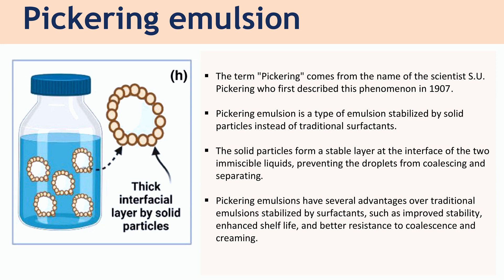The other type of emulsion is Pickering emulsion. The term Pickering comes from the name of the scientist S.U. Pickering, who first described this phenomenon in 1907. Pickering emulsion is a type of emulsion stabilized by solid particles instead of traditional surfactants. The solid particles form a stable layer at the interface of the two immiscible liquids, preventing the droplets from coalescing and separating. Pickering emulsions have several advantages over traditional emulsions stabilized by surfactants, such as improved stability, enhanced shelf life, and better resistance to coalescence and creaming.